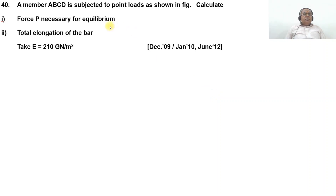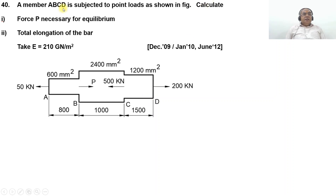We are going to take up one more problem, problem number 40. A member EBCD is subjected to a point load as shown in the figure. Calculate: number 1, the force P necessary for equilibrium, and also the total elongation of the bar. Take E equals 210 giga Newton per meter square.